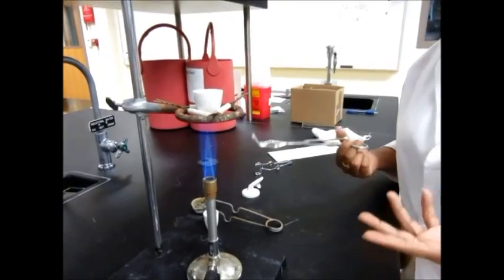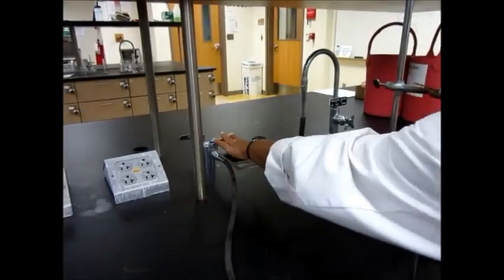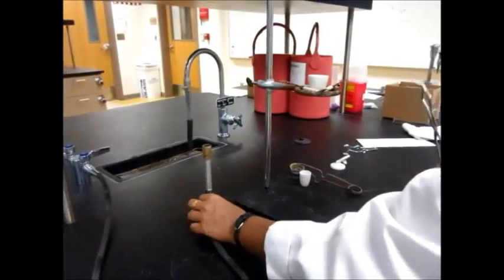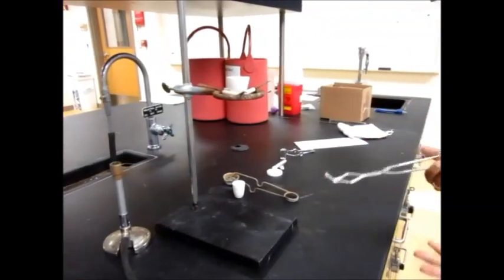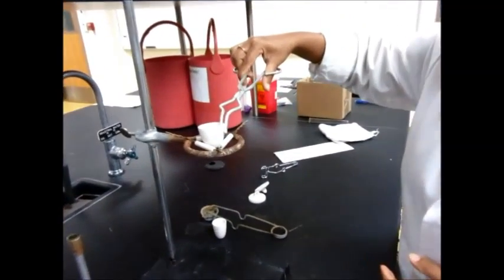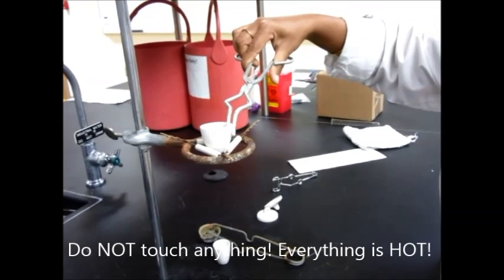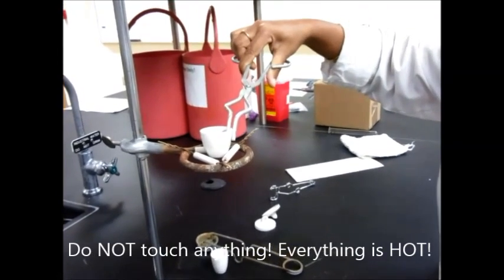When you're done heating for the five minutes, seven minutes that you're required to, at that point go ahead and turn off the Bunsen burner. Remove it and let the crucible cool like this for a while. Or what you can also do is remove the crucible and hold it like this very carefully. Do not touch anything with your hand at this point because everything is hot.